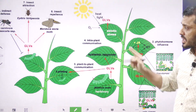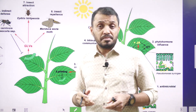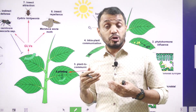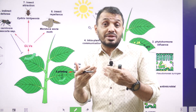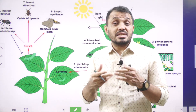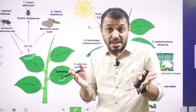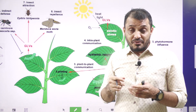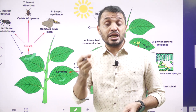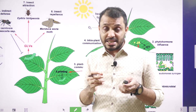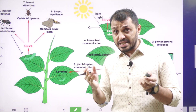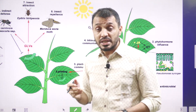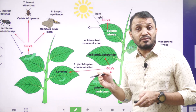The second topic is Green Leaf Volatiles. When a plant is subjected to stress — whether due to human cutting or insect attack — the plant releases certain chemicals. These chemicals signal neighboring plants and attract other insects. For example, when a plant leaf is attacked by a caterpillar, the plant releases chemicals that attract insects which can eat the caterpillar. This response happens through green leaf volatiles.